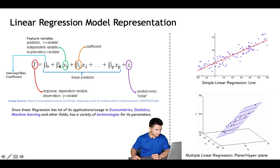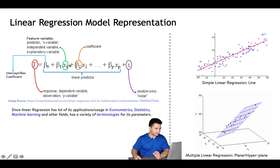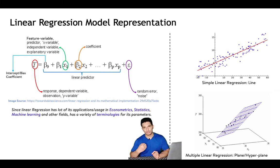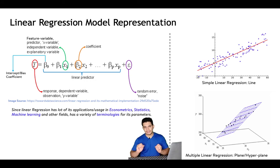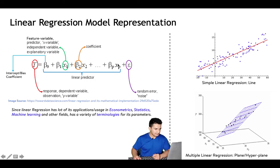The x features are called feature variables, predictors, x variables, independent variables, or explanatory variables. They are called independent because it is assumed that all features are independent of each other — promotions has nothing to do with weekend, weekend has nothing to do with rainy weather. This is an important assumption: all features are independent, while y is dependent on them.